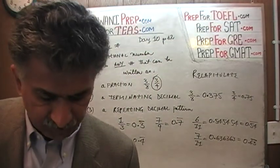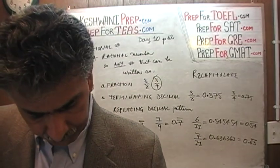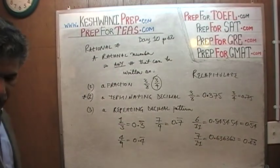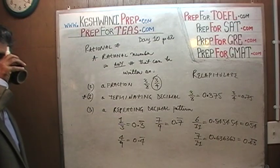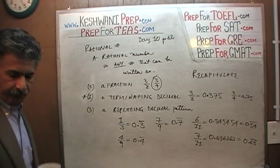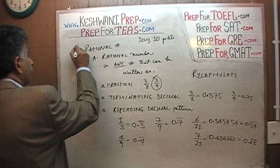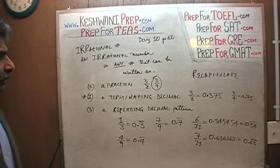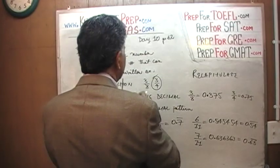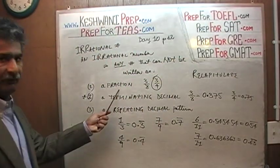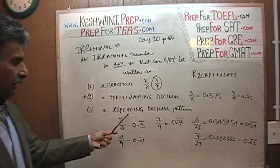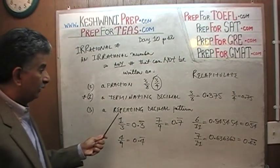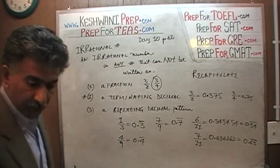So that's the definition of a rational number. The question is: what is an irrational number? Let's talk about those now. An irrational number is any number that cannot be written as a fraction. It doesn't have a terminating decimal, it doesn't have any repeating pattern, and it cannot be written as a fraction. It does not have a terminating decimal and it doesn't have any repeating pattern.